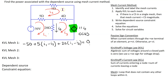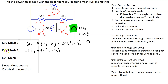Moving on to mesh 2, starting at the 1 ohm resistor, the first term is plus 1 times I2. We are applying Ohm's law to this resistor. Next is the 4 ohm resistor, which gives plus 4(I2 minus I3). We get I2 minus I3 and not vice versa because we are giving priority to the direction of I2, since this is the mesh to which we are applying KVL. To finish off, the 5 ohm resistor contributes 5(I2 minus I3), and this equals 0.